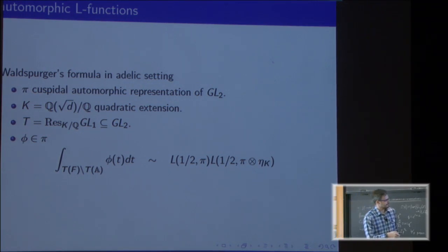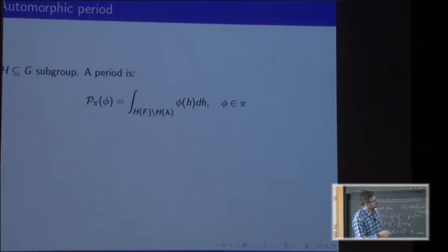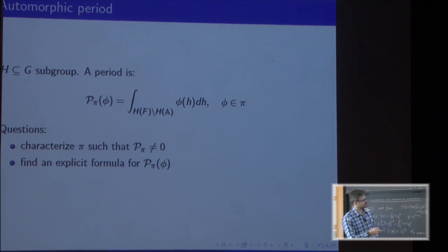Now we can see that we can replace GL(2) by any other group and T by a subgroup, and just consider such a problem. We call such an integral a period. π is a cuspidal automorphic representation of G. We take a vector in π and we consider such an integral.